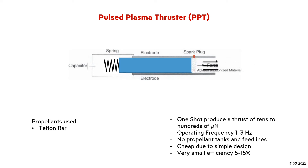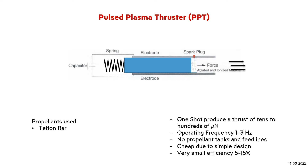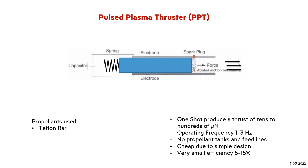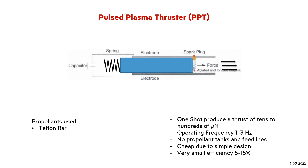The main disadvantage is very small efficiency, between 5 to 15%. A PPT thruster was successfully flown on the Soviet Zond 2 spacecraft towards Mars as early as 1964. Several applications followed in the United States. Presently, PPT thrusters are under evaluation for fine attitude and position control of formation flying satellites, on account of their small impulse capability.